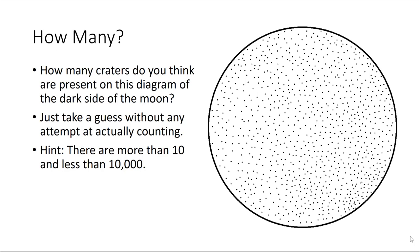Looking at this diagram, how many spots do you think there are within that larger circle? I'll give you a hint. There are more than 10 and less than 10,000. Record your initial guess now.